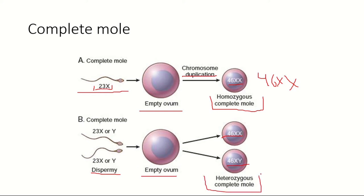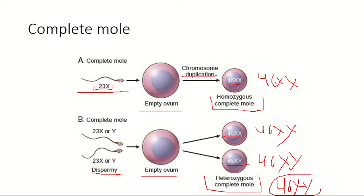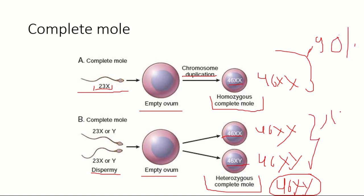If the empty ovum is fertilized by two sperms, it can give rise to 46XX when both sperms carry an X chromosome, or 46XY when one sperm carries a Y chromosome — this is called a heterozygous complete mole. A 46YY karyotype is very rare and the cell will not survive long. The 46XX karyotype is most common, occurring 90% of the time, while 46XY occurs in about 10% of cases.